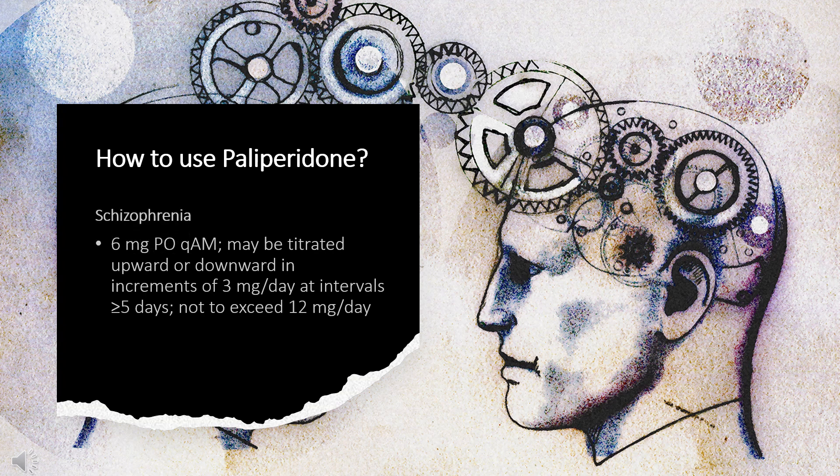How to use palliperidone? For schizophrenia: 6 mg orally once daily in the morning, may be titrated upward or downward in increments of 3 mg per day at intervals greater than or equal to 5 days, not to exceed 12 mg per day. For schizoaffective disorder: indicated as monotherapy and as an adjunct to mood stabilizers or antidepressants; 6 mg orally once daily in the morning, range 3 to 12 mg. Titration may not be necessary. If exceeding 6 mg per day, increases of 3 mg per day are recommended at intervals of 4 days or more, not to exceed 12 mg per day.